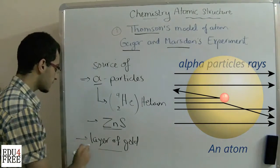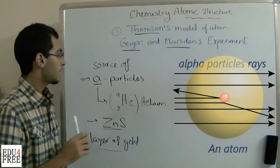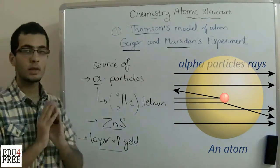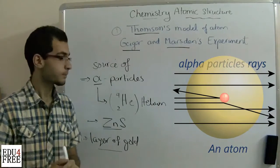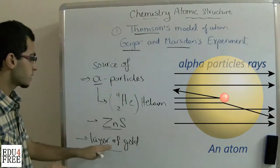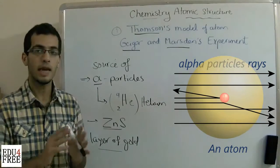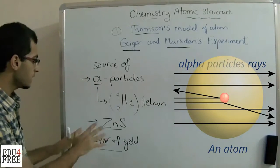We said that some glowing points remained as they were, and this indicates that the alpha particles passed through. This means that there is no density in these atoms or in these parts.